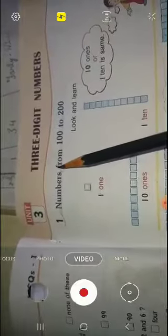So in previous unit we have completed the concept of place value of two digit numbers. Today we are going to start unit 3, three digit numbers.